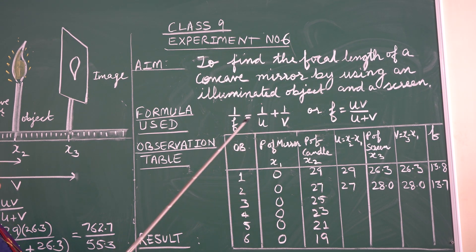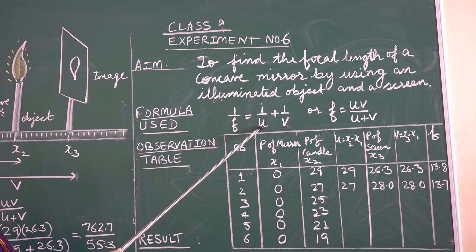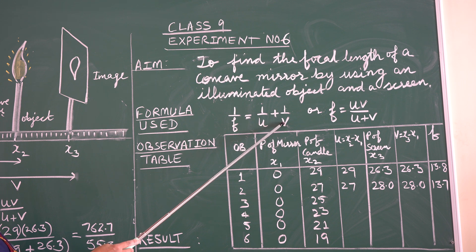Here f is the focal length of the concave mirror, u is the object distance, and v is the image distance.